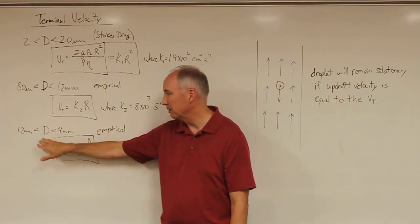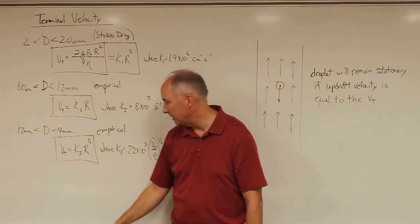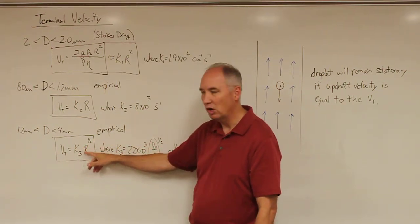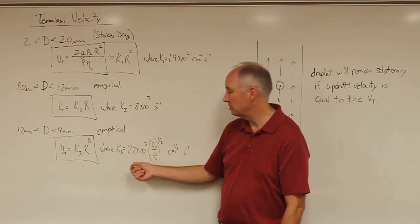For these large droplets, which are actually rain droplets, 1.2 millimeters up to 4 millimeters, the terminal velocity is given by K3 times R to the one half power, where K3 is 2.2 times 10 to the third.